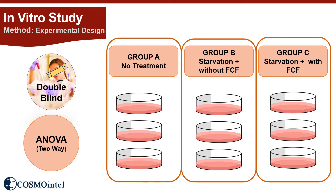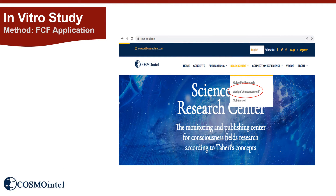This study was conducted in three groups. Group A is the control group without any treatment. Group B is the sham group that received starvation without FCF, and Group C received both starvation and FCF. There were three replications in each group. The experimenter was blinded to the treatment status, and two-way analysis of variance was used for data analysis. The FCF treatment request for Group C was registered on the Cosmo Intel website for the entire experiment duration, from model creation to the end of the assay.